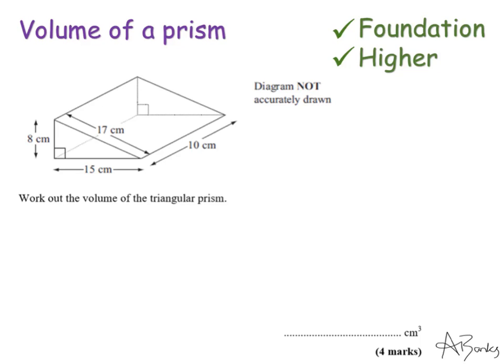Hi everyone, thanks for watching my online lesson on volume of a prism. This is an example of a prism — this is a triangular prism, but prisms can take many different forms. For example, a cuboid is a type of prism, and cylinders are prisms as well. In this video we're mainly going to be focusing on triangular prisms, compound prisms, and trapezium-faced prisms. A prism is just a 3D shape that has the same cross-section running all the way through the shape.